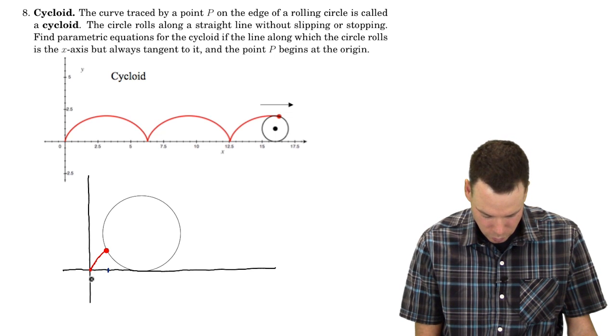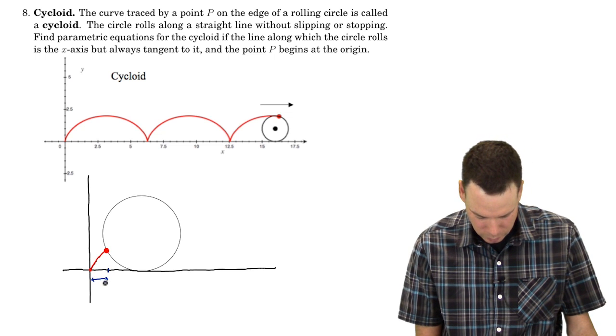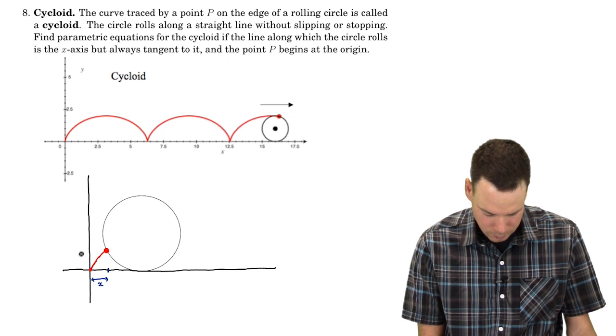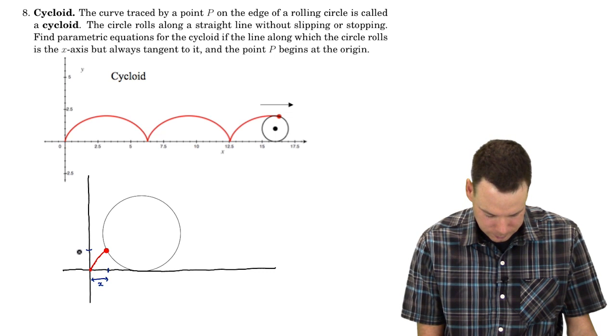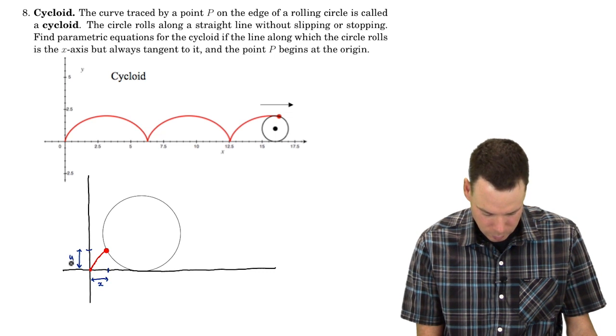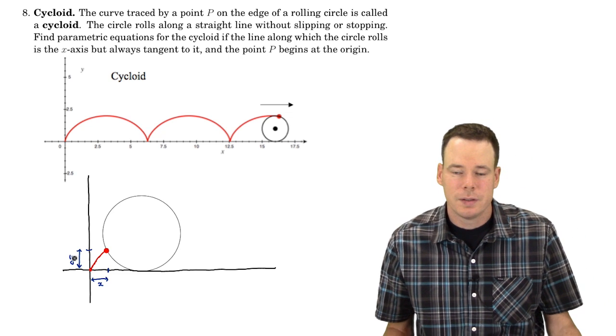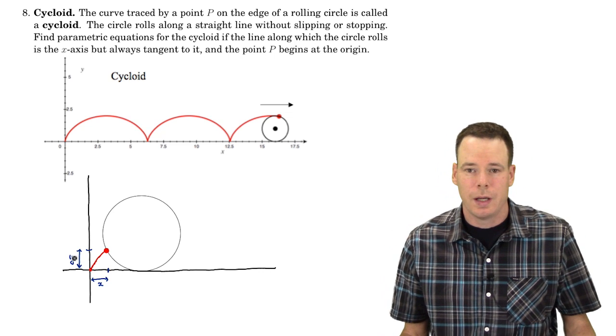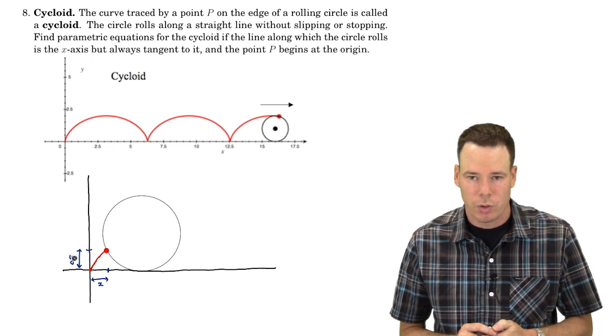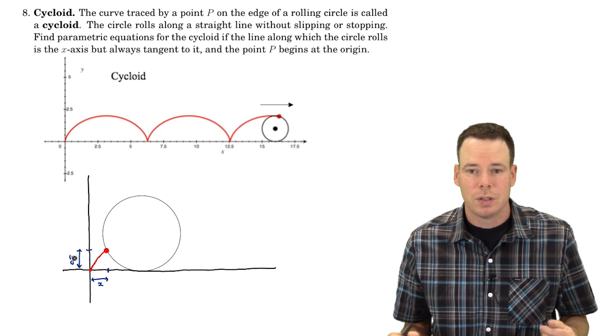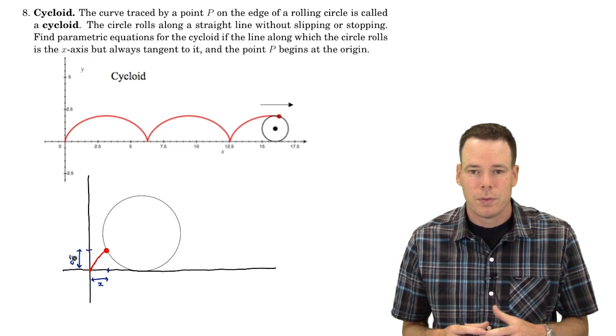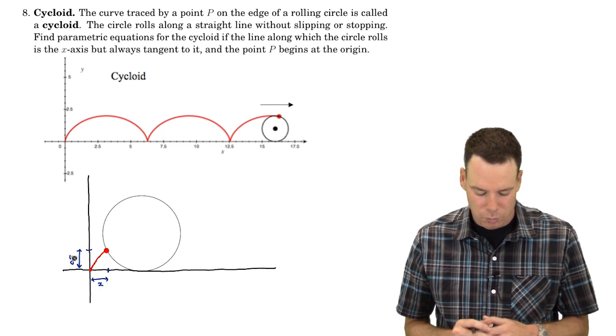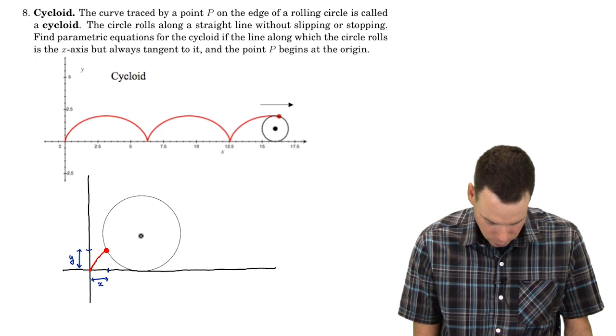I want to come up with an expression for the x-coordinate. So the x-coordinate of that point would be this distance here. And the y-coordinate, that would be that height there. What is the x-coordinate and the y-coordinate? And how can they be described in terms of some parameter? Well, the parameter I'm going to use is just the angle through which the circle has already rolled.